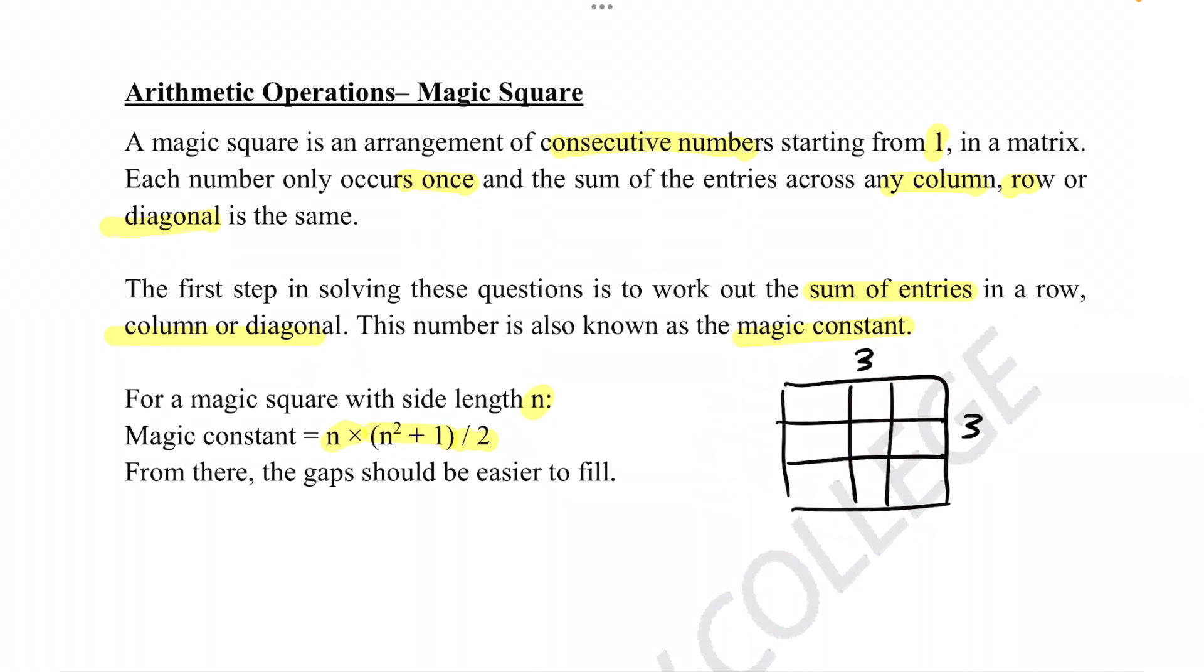In order to find what these numbers would add up to, we just substitute the 3 into the n. For example, we can go n equals 3 times 3 squared plus 1 divided by 2. That's 3 times 9 plus 1 divided by 2, which is 3 times 10 divided by 2, 30 divided by 2, which is finally 15.